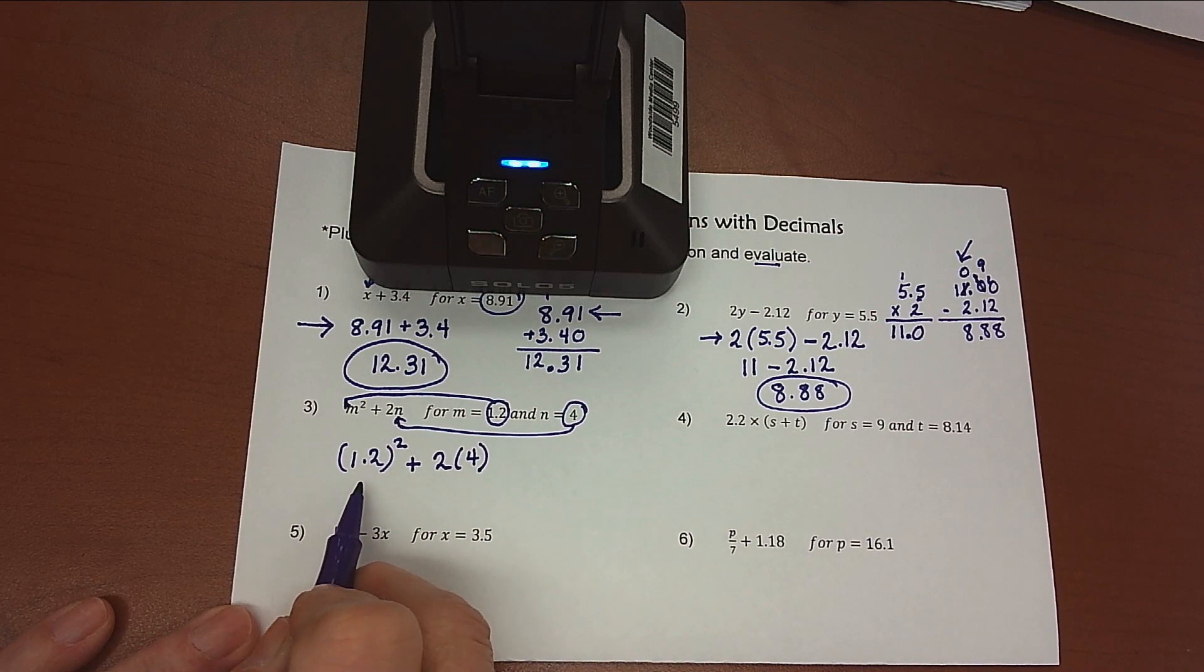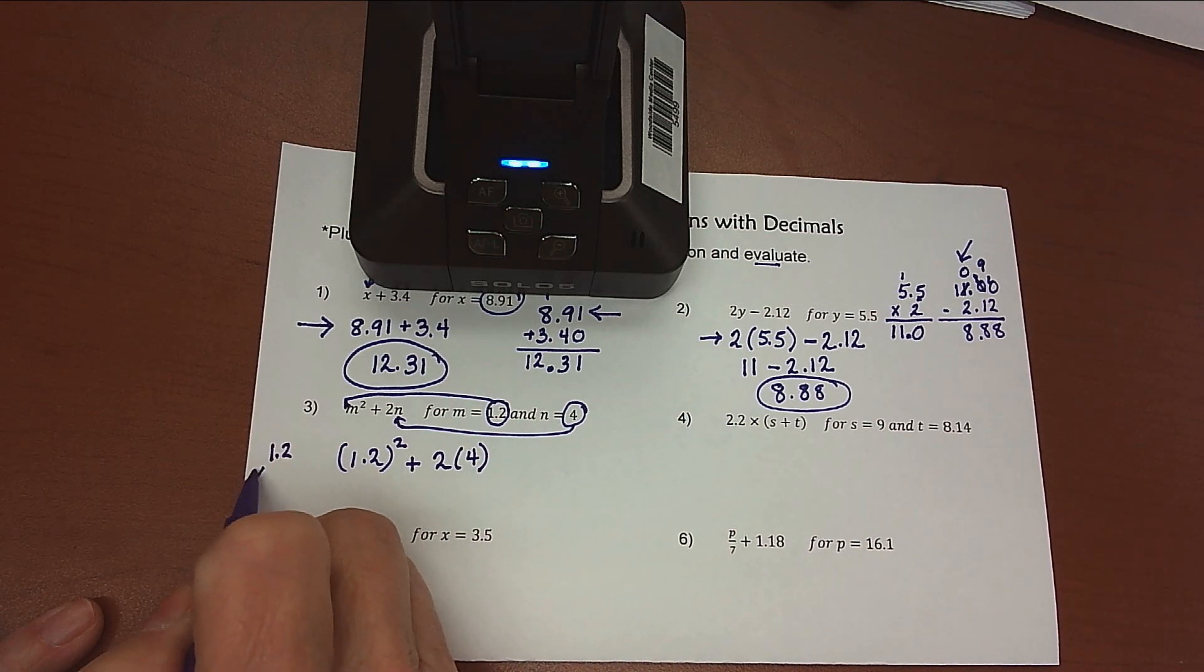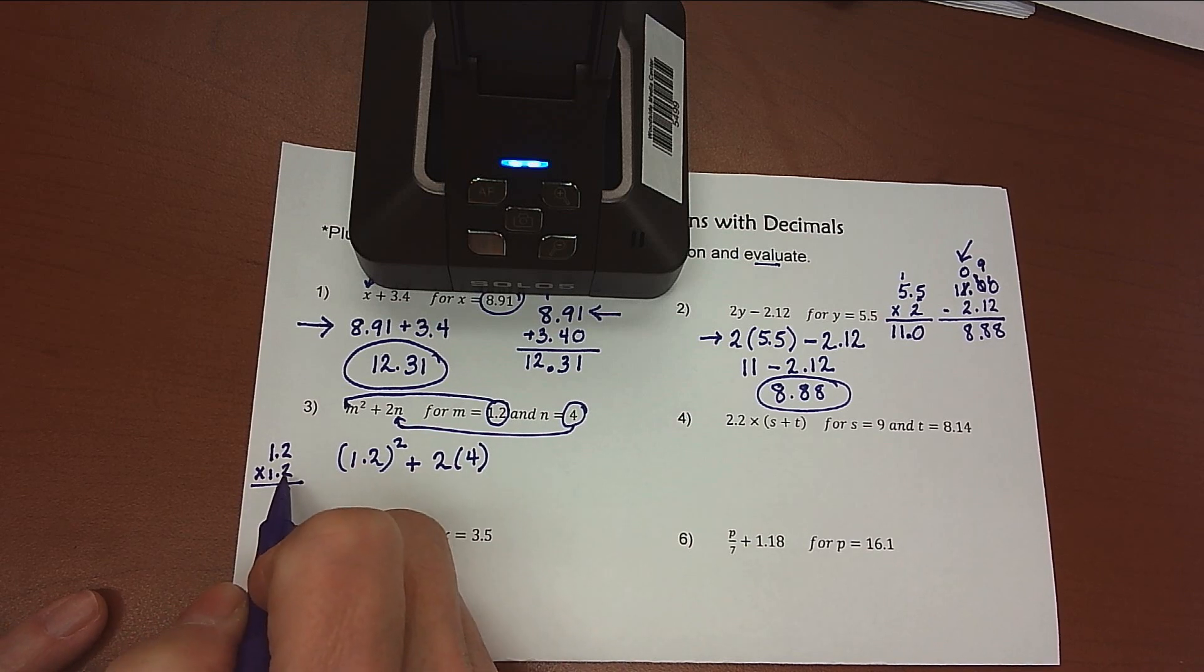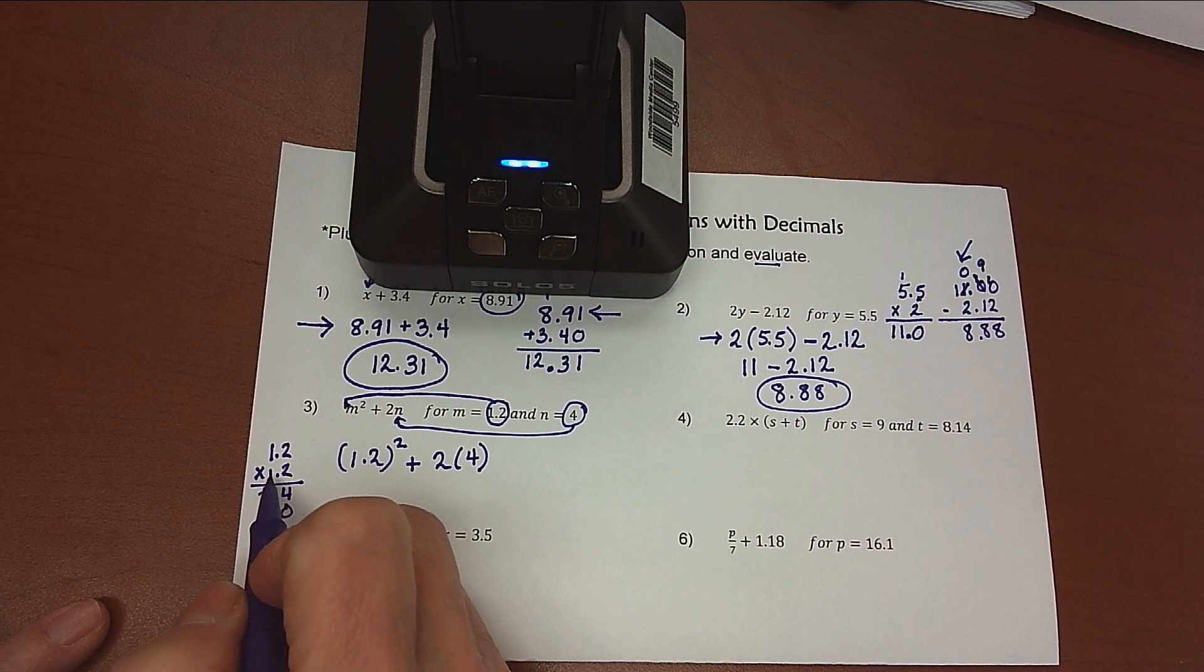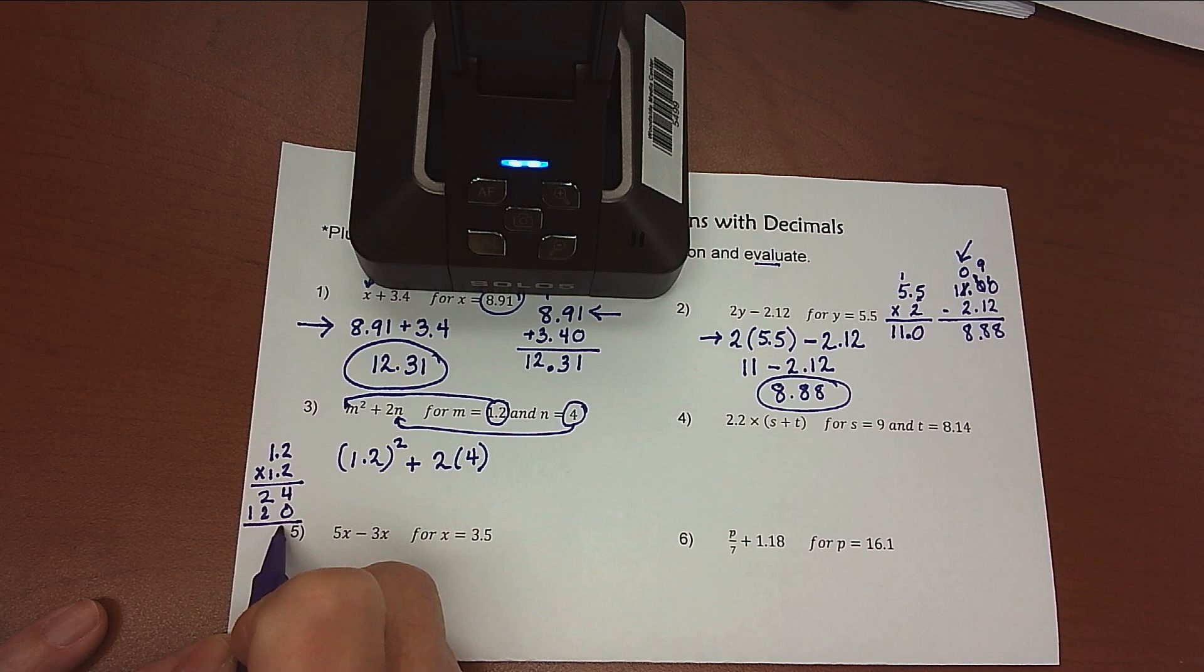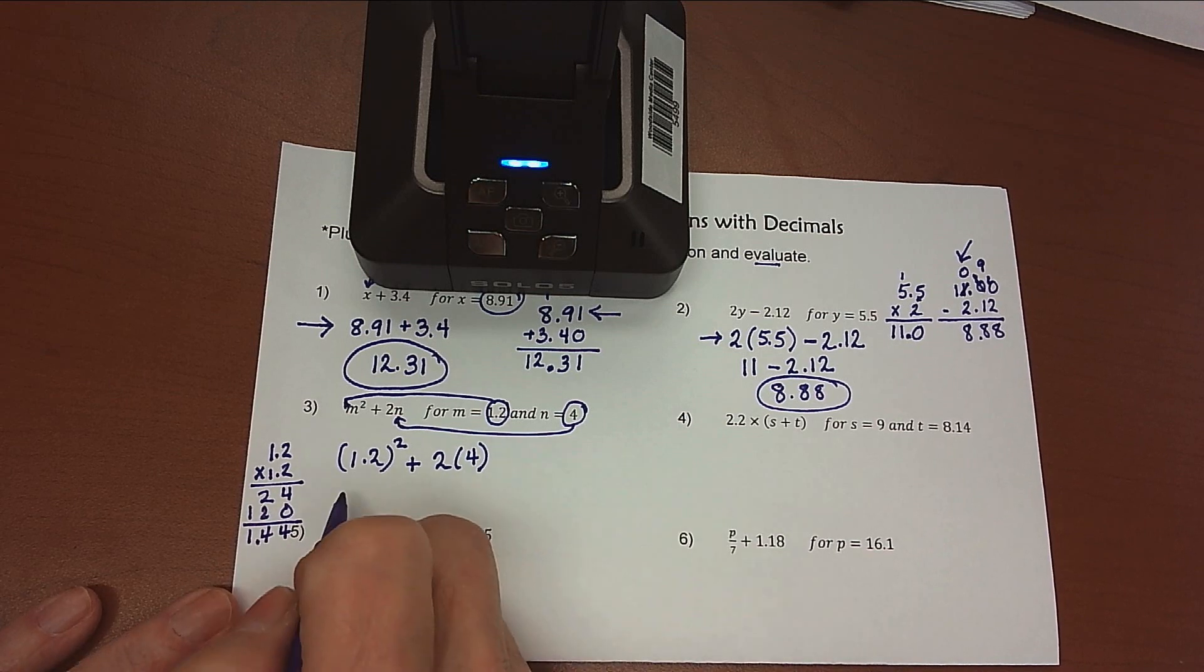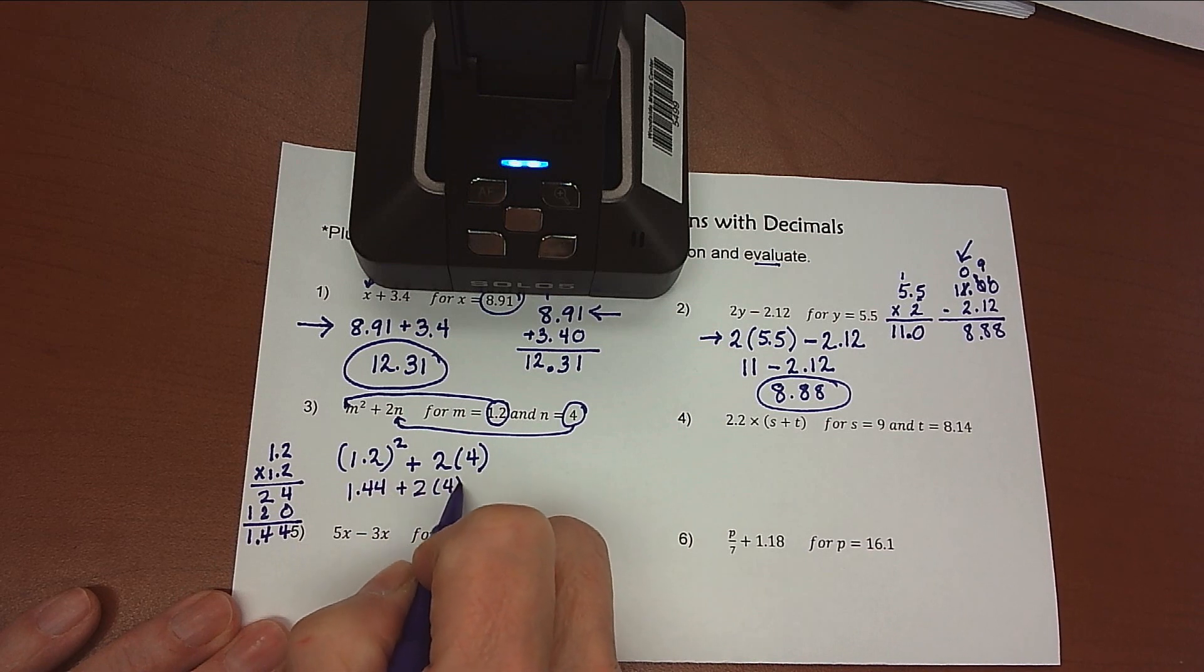According to the order of operations, I want to do my exponents first. So 1.2 times 1.2. I'm ignoring the fact that I have a decimal there right now. 2 times 2 is 4. 2 times 1 is 2. Moving over a digit, so add a 0. If I moved over two digits, I'd have to add two 0s. 1 times 2 is 2, and 1 times 1 is 1. Add everything up, and we've got 4, 4, 1. Two numbers behind the decimal point. So we have 1.44. And we're adding then 2 times 4, which is 8.